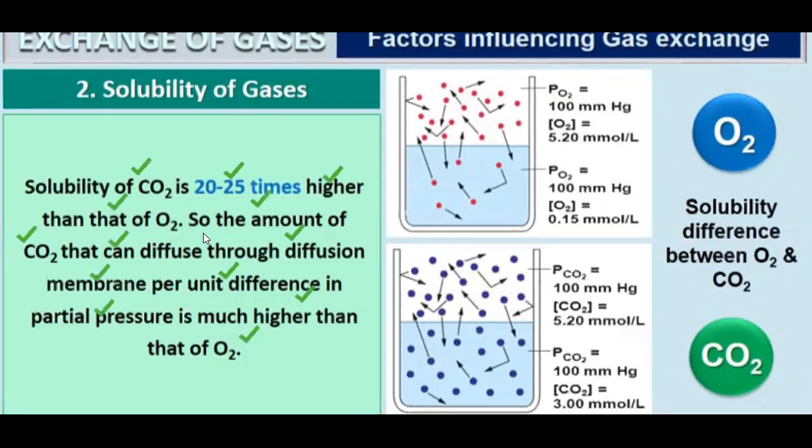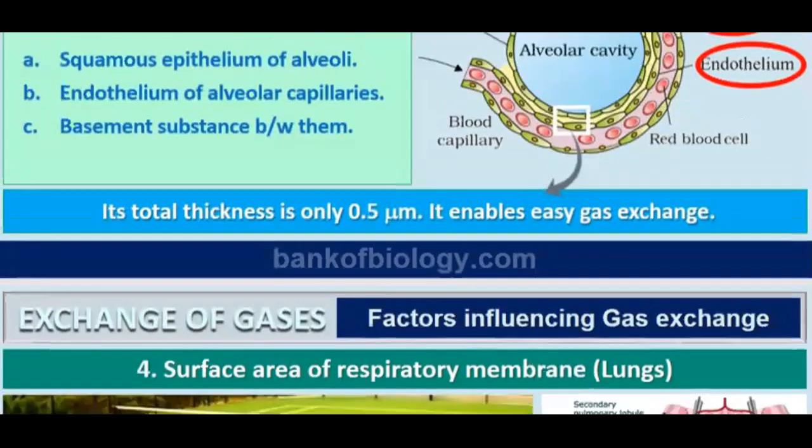We know that oxygen is transported in the form of oxyhemoglobin and carbon dioxide simply dissolves or binds differently. This was the second factor influencing gaseous exchange — that is the solubility of carbon dioxide and oxygen.